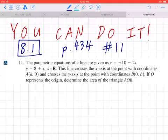Hi everyone, let's take a look at number 11 on page 434. The parametric equations of a line are given as x equals negative 10 minus 2s, y equals 8 plus s, where s is an element of real numbers.